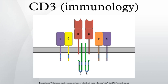In histochemistry, CD3 is initially expressed in the cytoplasm of pro-thymocytes, the stem cells from which T-cells arise in the thymus. The pro-thymocytes differentiate into common thymocytes and then into medullary thymocytes, and it is at this latter stage that CD3 antigen begins to migrate to the cell membrane.